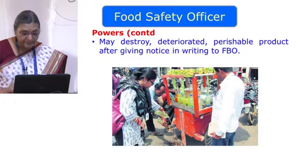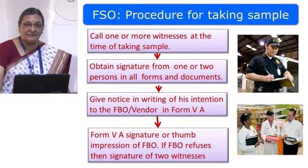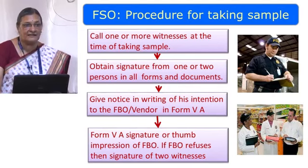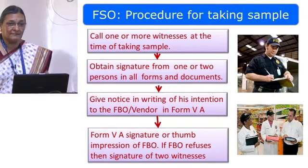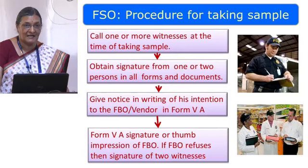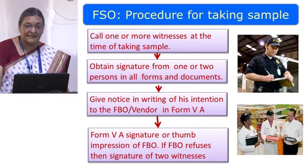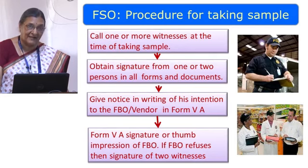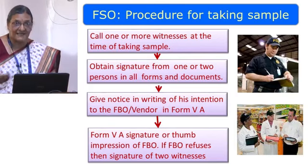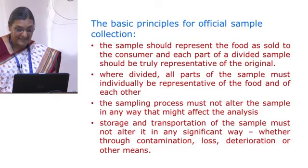This happened in Delhi. Although you are not food safety officers, you should know there is a protocol by which the FSO picks up a sample. It is not that he just goes and says he will take a sample and get it analysed. When he takes the sample, he must have a witness with him. He has to take the signature of the FBO on all forms, bring the required form numbers, and give written notice of his intention to the FBO in Form 5A. If the FBO refuses to sign, the witness will sign.